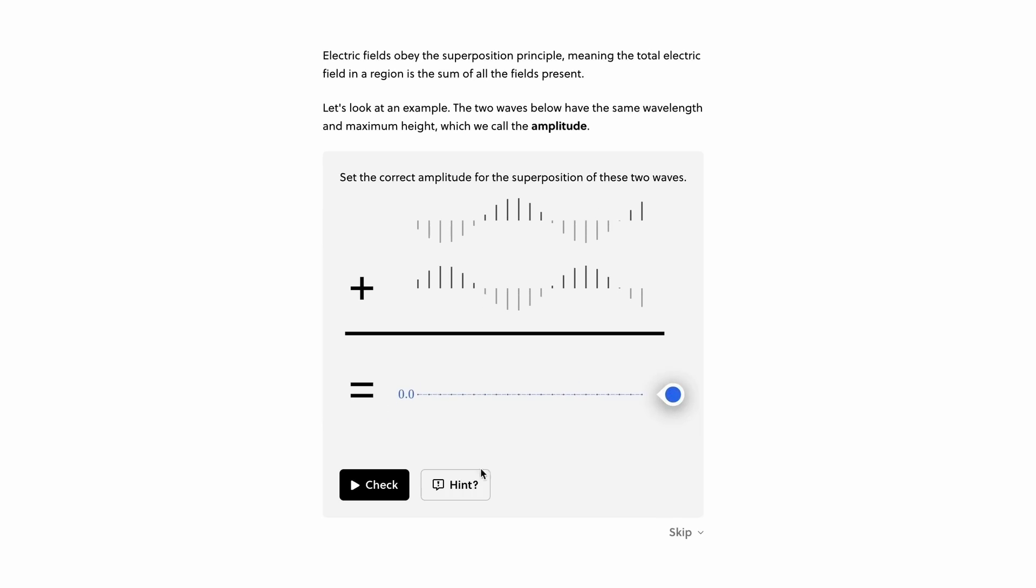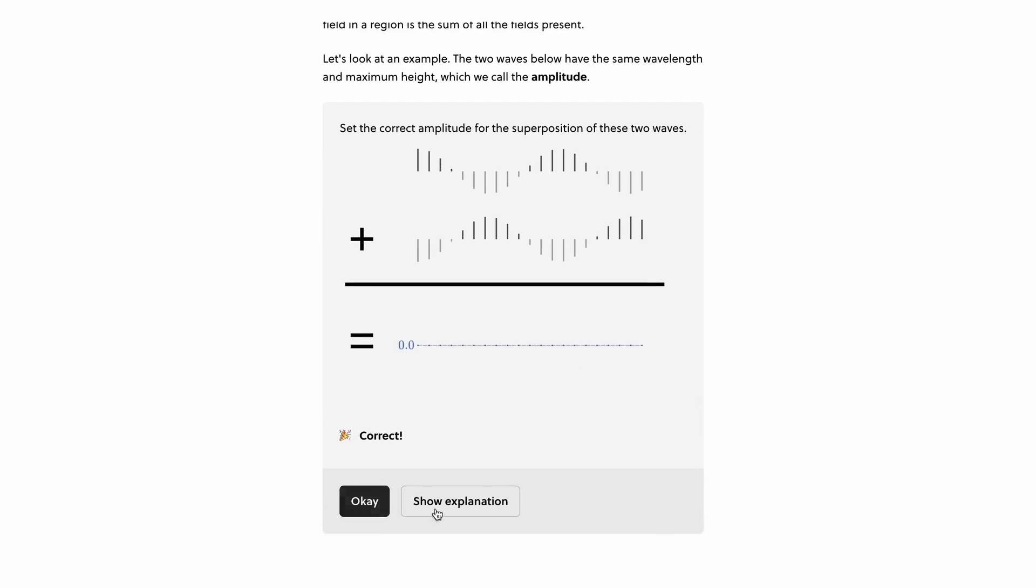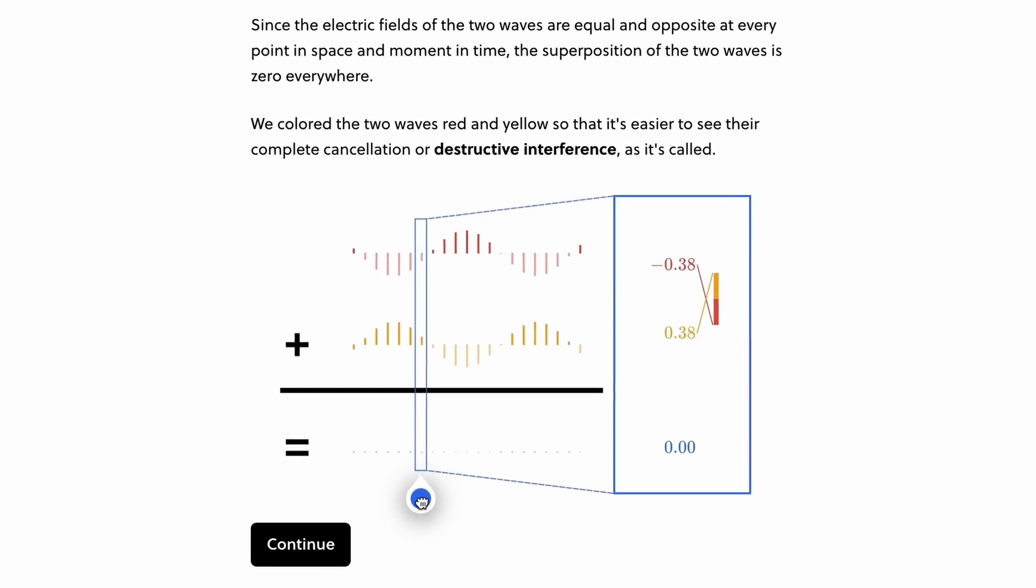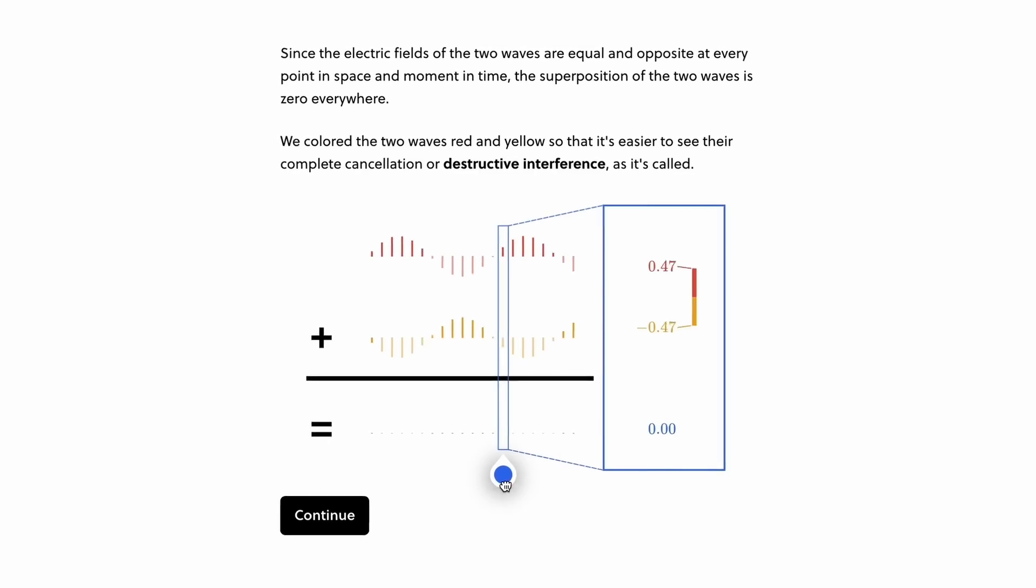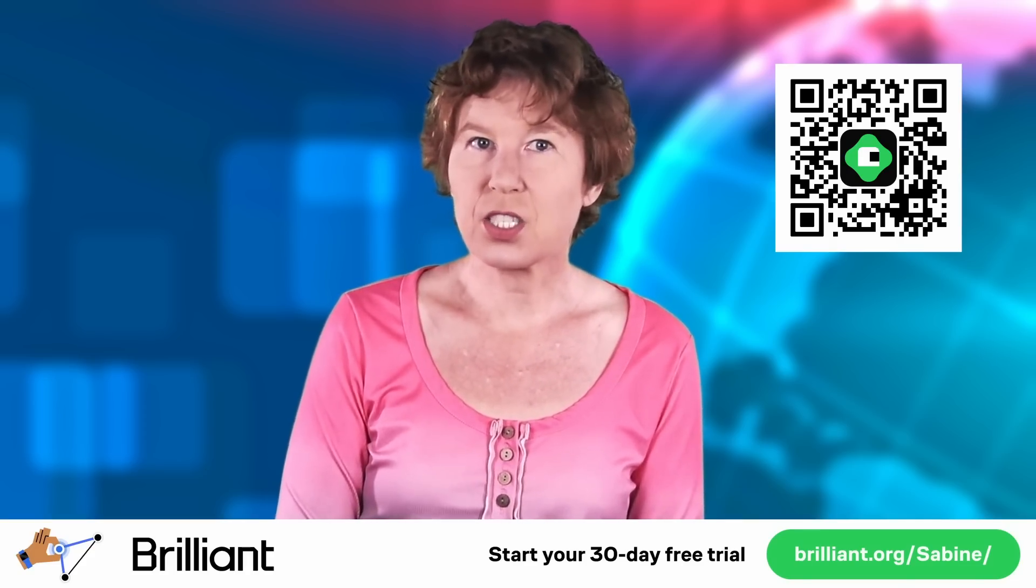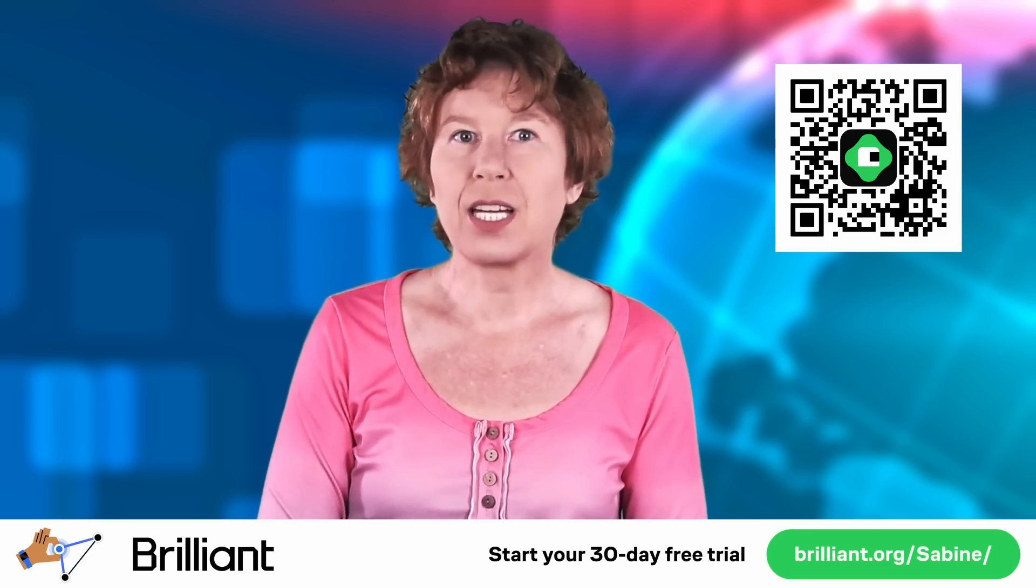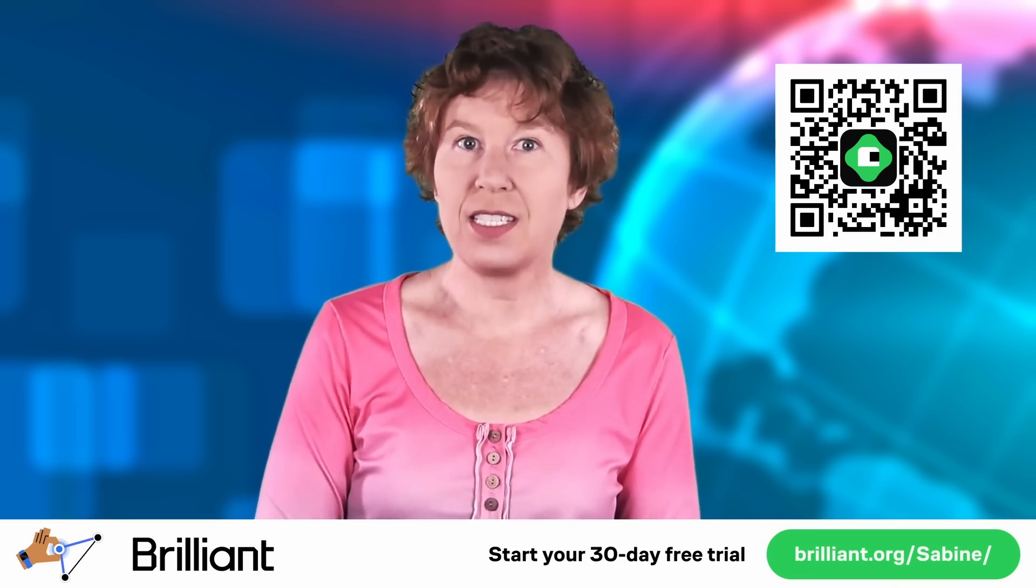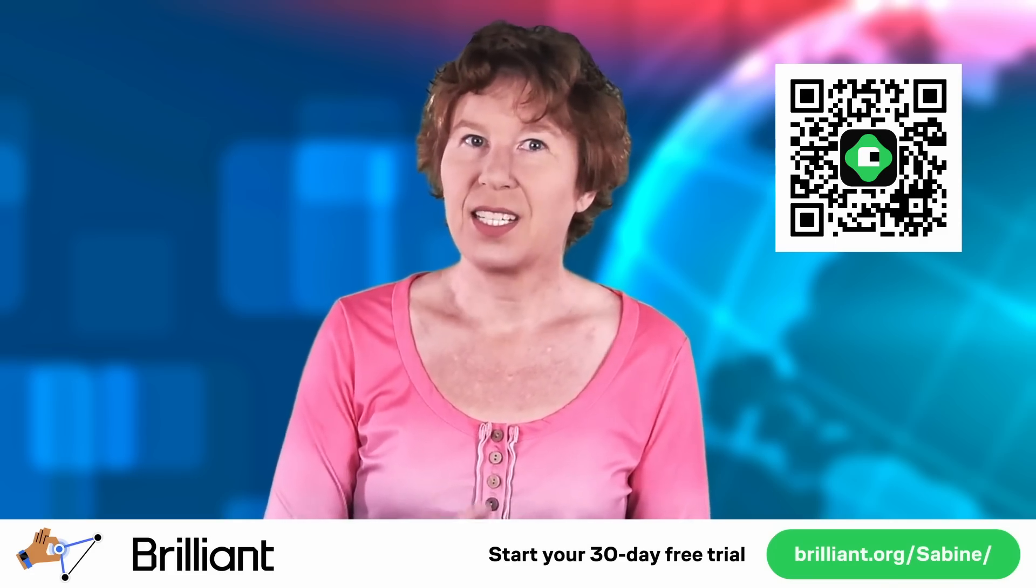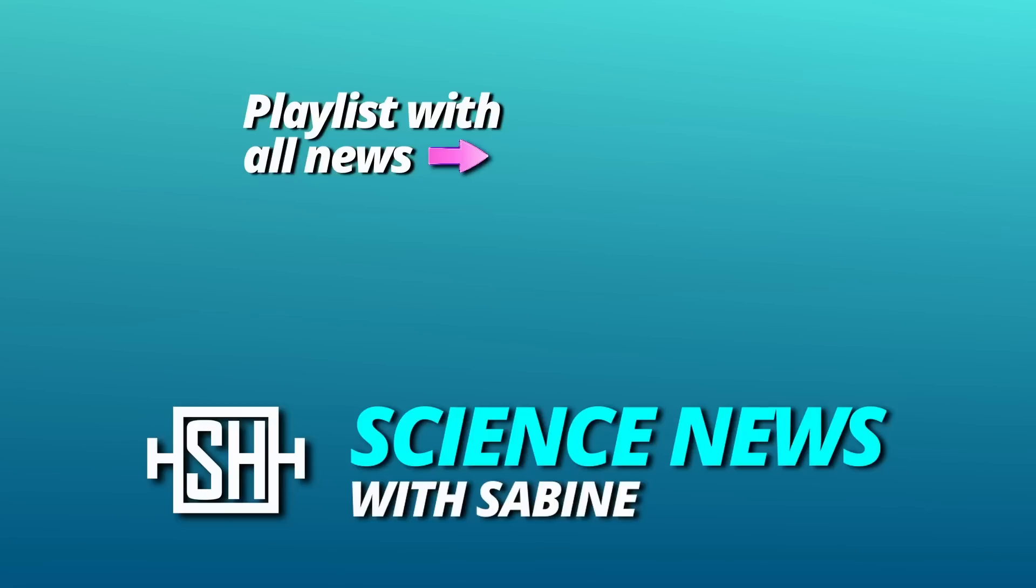It'll help you understand what a wave function is and what the difference is between superpositions and entanglement. It also covers interference, the uncertainty principle, and Bell's theorem. And after that, you can continue, maybe, with their course on quantum computing or differential equations. And of course, I have a special offer for users of this channel. If you use my link brilliant.org slash sabine, you'll get to try out everything Brilliant has to offer for a full 30 days. And you'll get 20% off the annual premium subscription. So go and check this out. Thanks for watching. See you tomorrow.